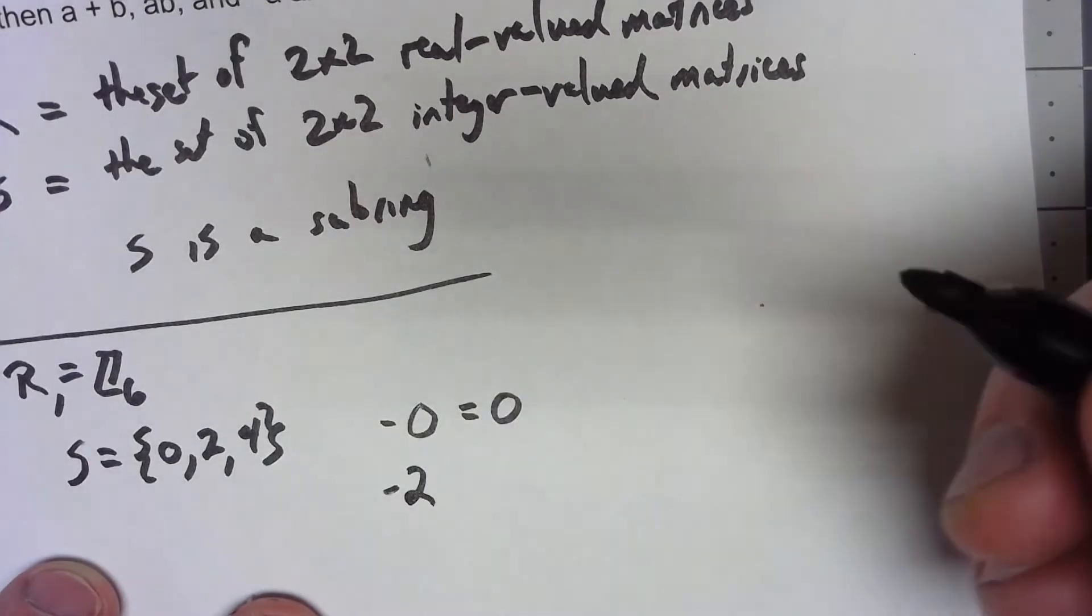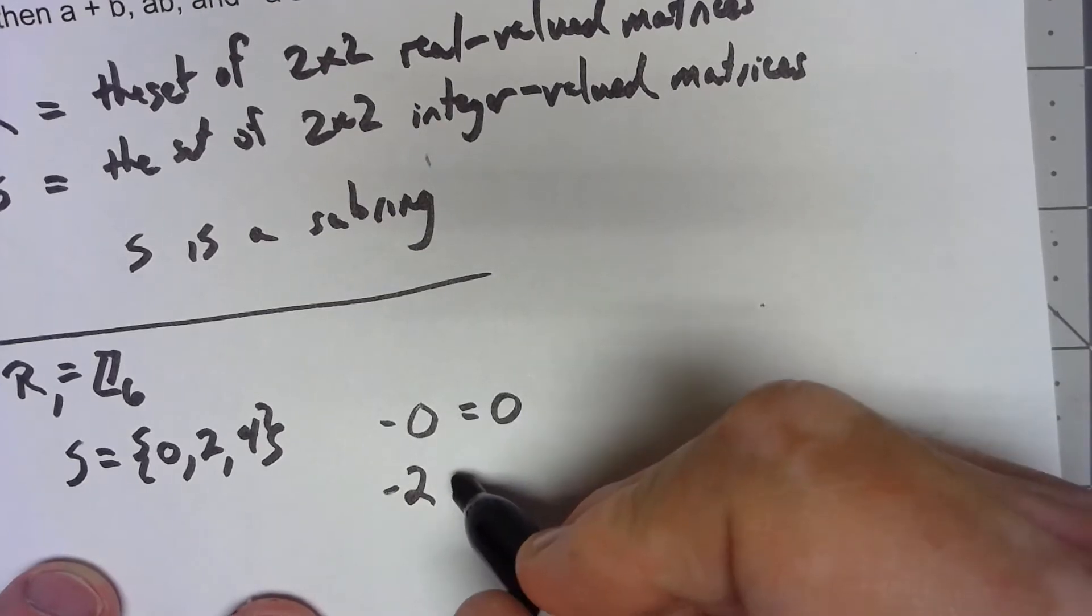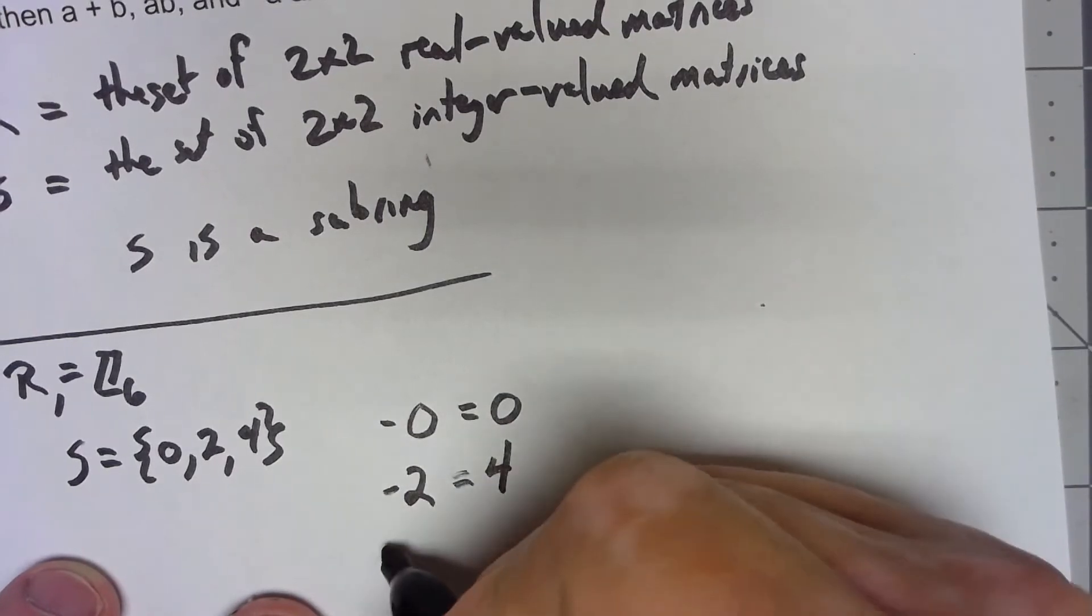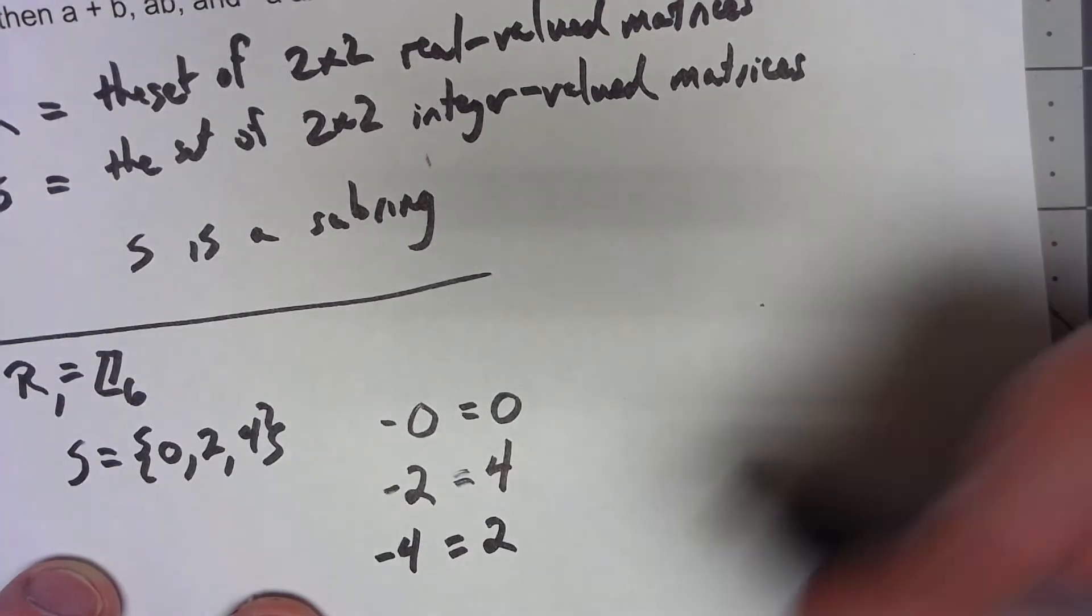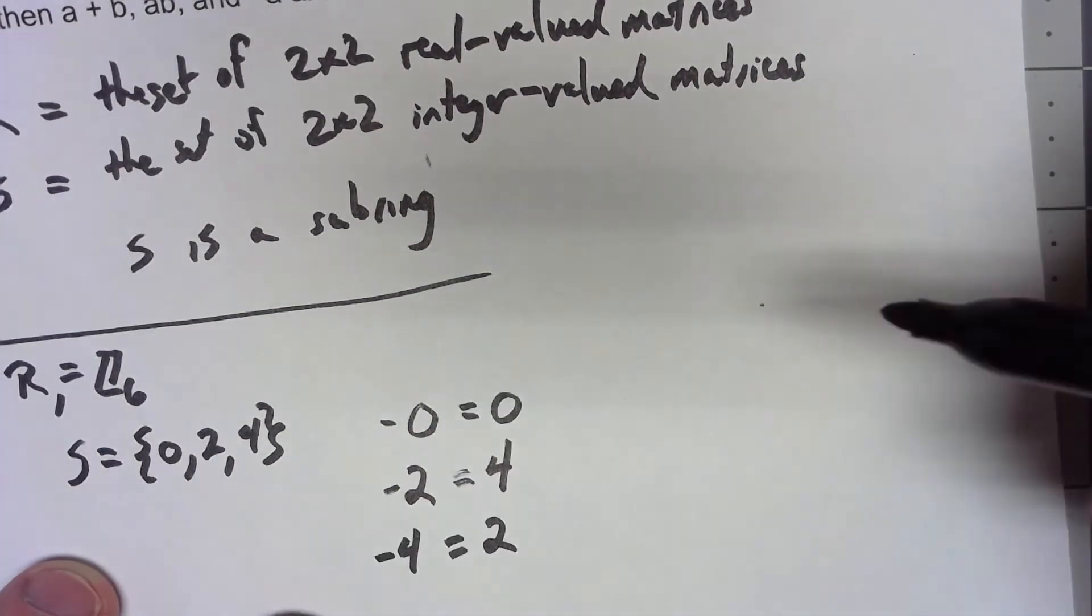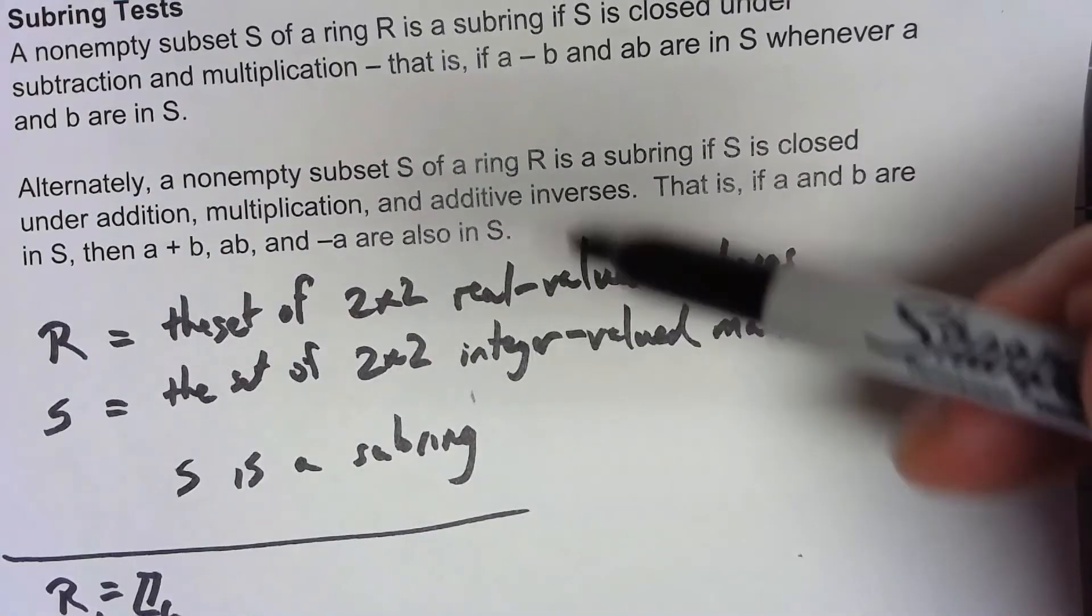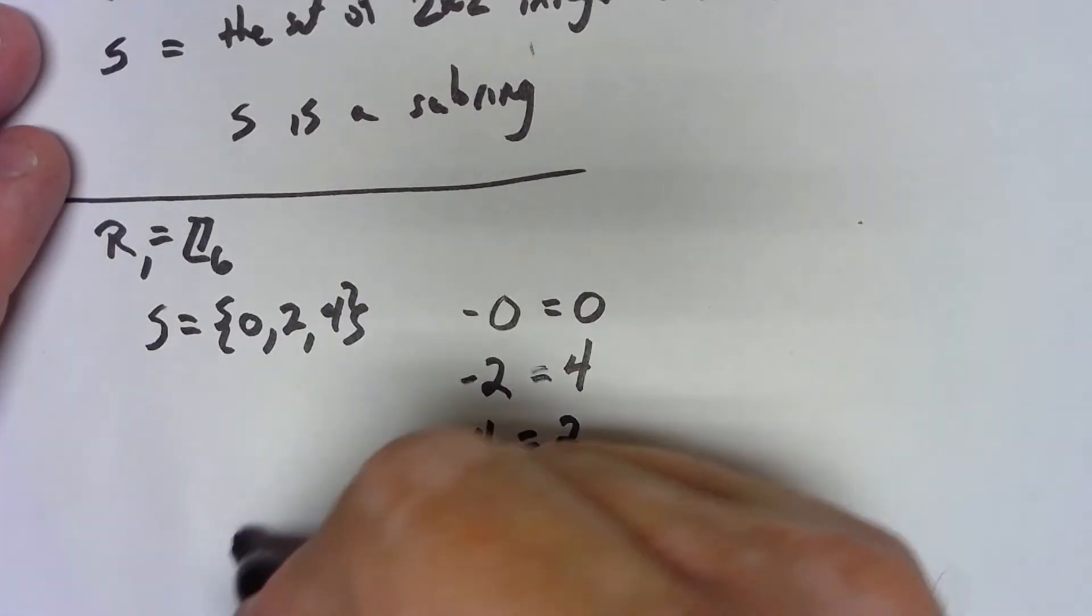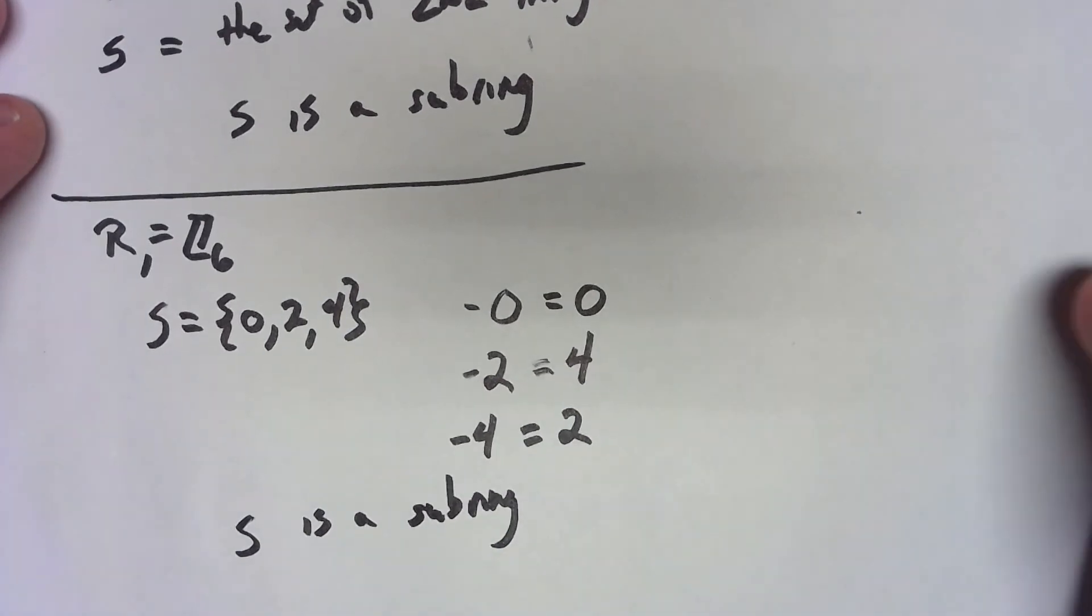Negative 2, we're trying to figure out what do we add to 2 to get 0. Well, since we're doing things mod 6, that's 4. And similarly, negative 4 is in this case 2. Again, every additive inverse is in the set, so that set is closed under addition, closed under multiplication, closed under additive inverses. Therefore, this set is a subring.